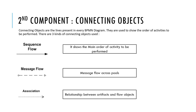The second component of a BPMN diagram is called connecting objects. Connecting objects are the lines present in every BPMN diagram. They are used to show the order of activities to be performed. There are three kinds: sequence flow, which shows the main order of activities to be performed; message flow, which shows that a message flows across pools; and association flow, which shows the relationship between artifacts and flow objects.